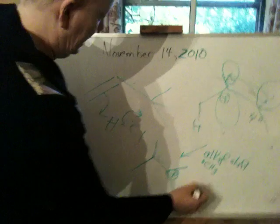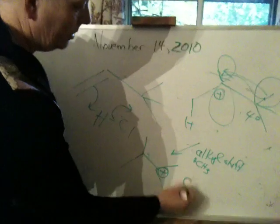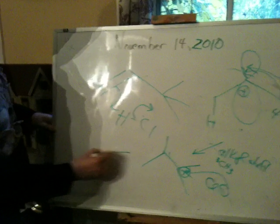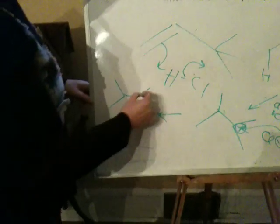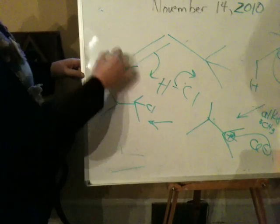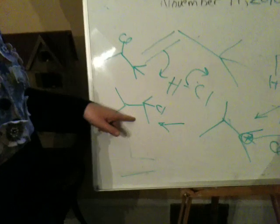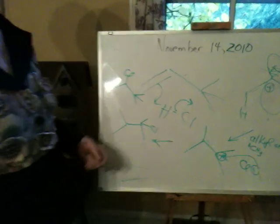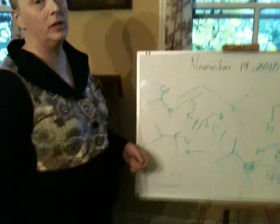But it doesn't have to be a methyl — it could be an ethyl or other things. When this cation forms, the chloride will jump in there and bond. We would get at least some of — maybe not all of this — we would also get some of this product from the rearrangement. On Wednesday, I will discuss this in more detail. Have a good night.